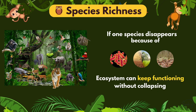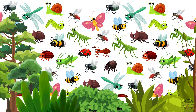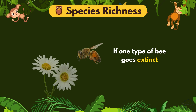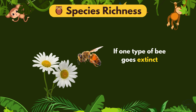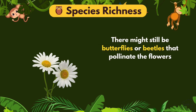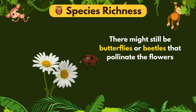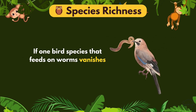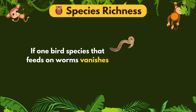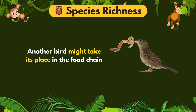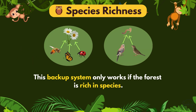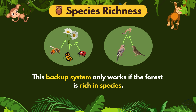That means the ecosystem can keep functioning without collapsing. Imagine a forest with many different insect species. If one type of bee goes extinct, there might still be butterflies or beetles that pollinate the flowers. If one bird species that feeds on worms vanishes, another bird might take its place in the food chain. This backup system only works if the forest is rich in species.